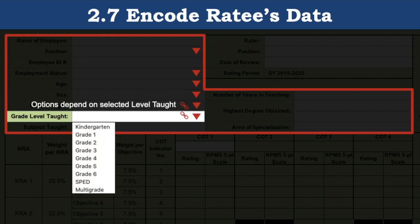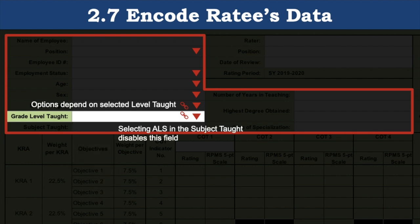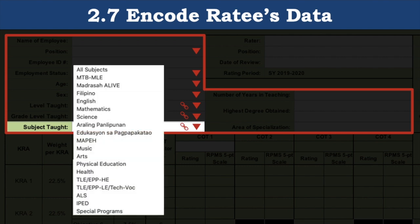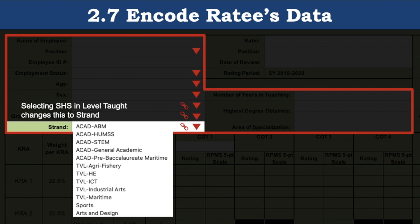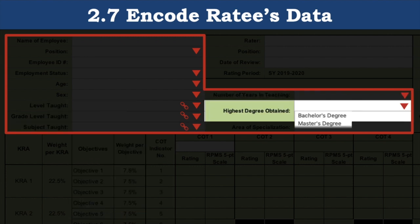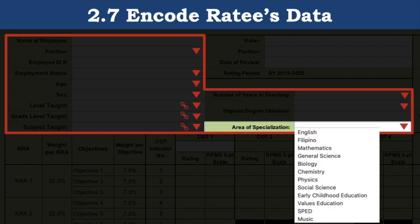Next is grade level taught, which depends on the selected level taught. For example, if you've selected elementary, the options will be kindergarten to grade 6. If you chose junior high school, the options will be grade 7 to 10. If you've selected else in the subject taught field, the grade level taught field will be disabled. Next is the subject taught, which is a drop-down list of all subjects. This field changes to strand if you've selected senior high school in level taught. Then we have number of years in teaching, highest degree obtained, and area of specialization, all drop-down options.